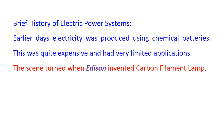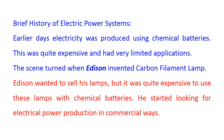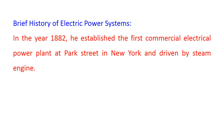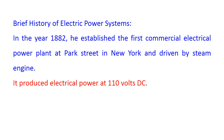This scene changed when Edison invented the carbon filament lamp. Edison wanted to sell his lamps, but it was quite expensive to use these lamps with chemical batteries. In the year 1882, Edison established the first commercial electrical power plant at Park Street in New York City. He used DC. This electrical power plant was driven by steam engines and DC generators that produced electrical power at 110 volt DC.